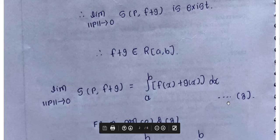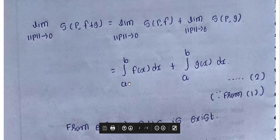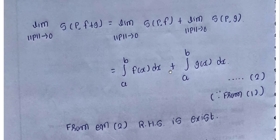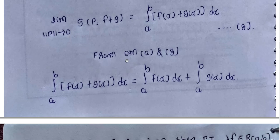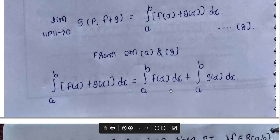From equations 2 and 3, we have: limit as norm P tends to 0 of S(P, f+g) equals the integral from a to b of f(x) dx plus the integral from a to b of g(x) dx. Therefore the integral from a to b of [f(x) + g(x)] dx equals the integral of f(x) dx plus the integral of g(x) dx over [a,b].